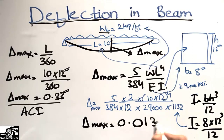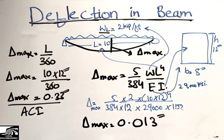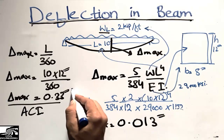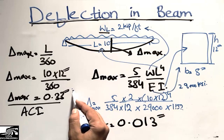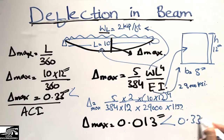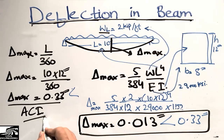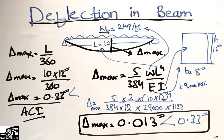The calculated maximum deflection is 0.013 inches. Since this is less than the allowable limit of 0.333 inches under live load, our beam is safe. According to ACI (American Concrete Institute) recommendations, the beam is well designed.